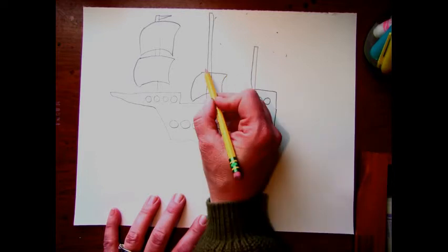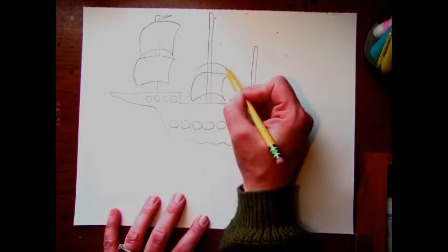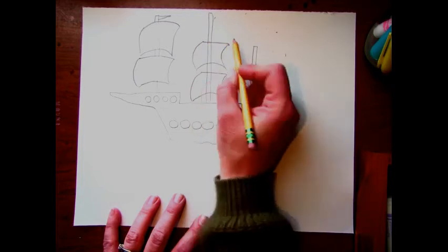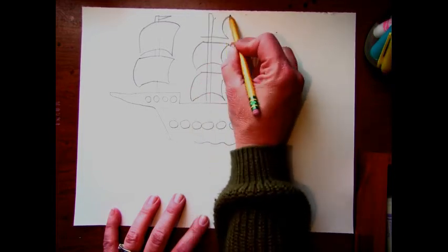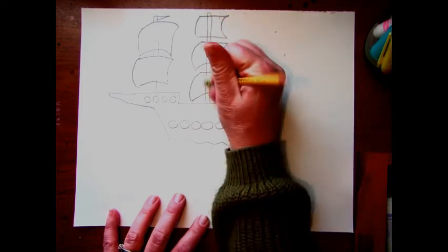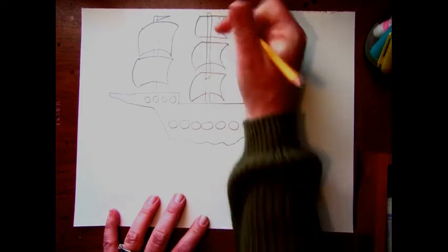I'll add three sails up on this taller pole. Don't forget to erase the poles because they're behind the sails.